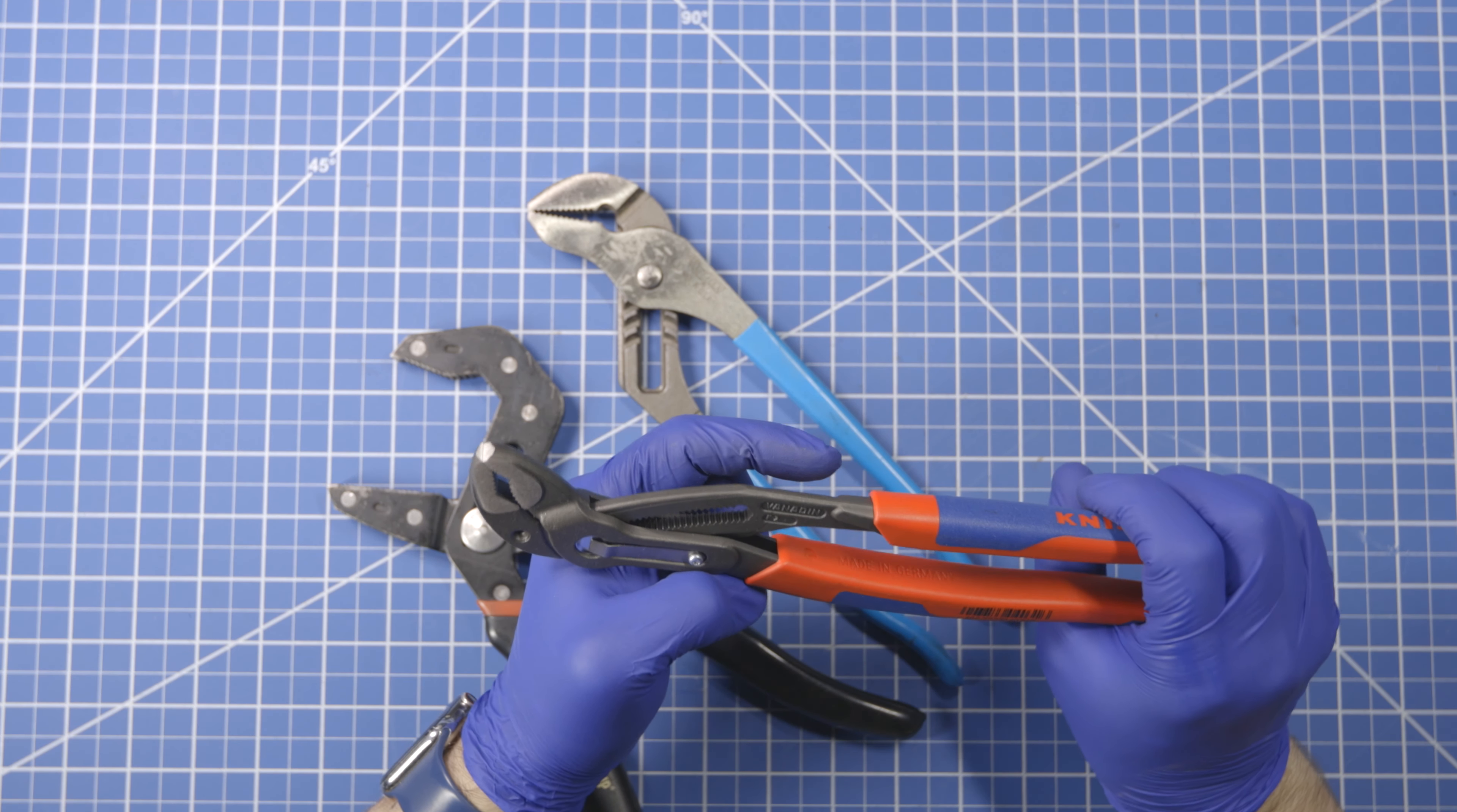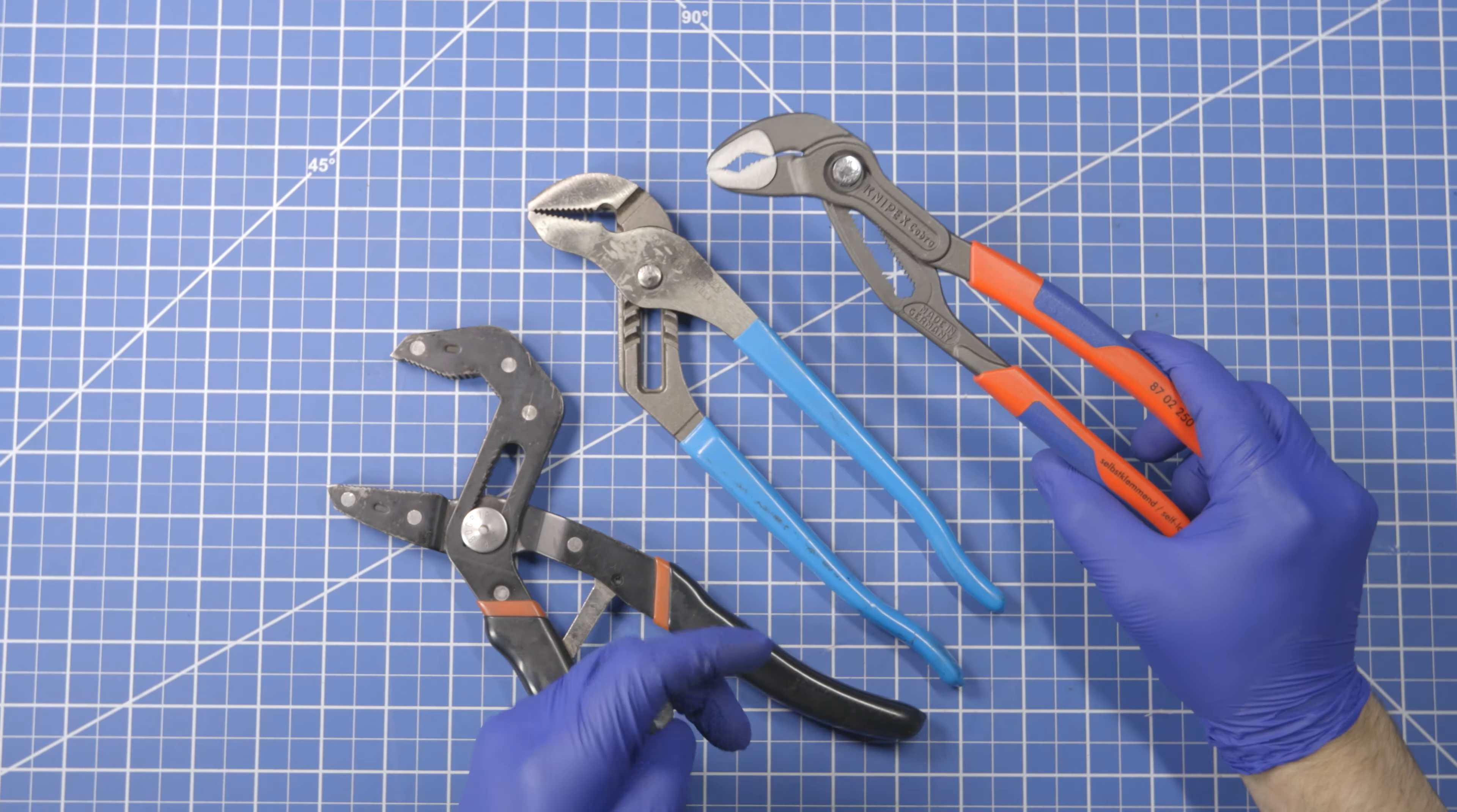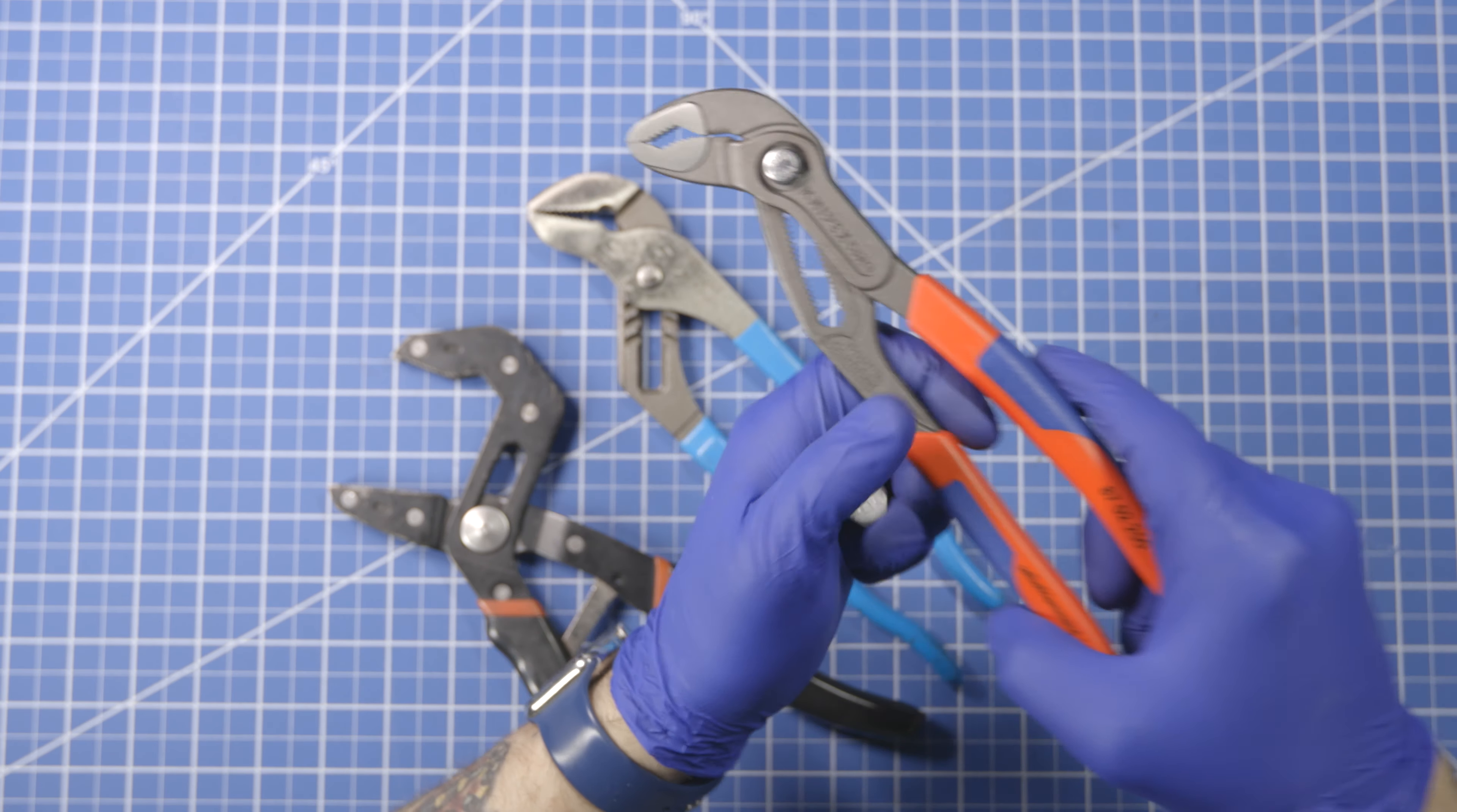So these are the Cobra pliers, a roughly similar mechanism to this except that there are many many more teeth down that upper jaw channel.